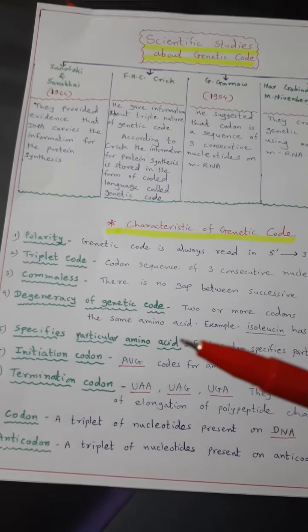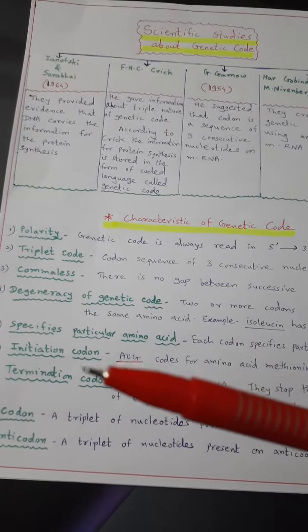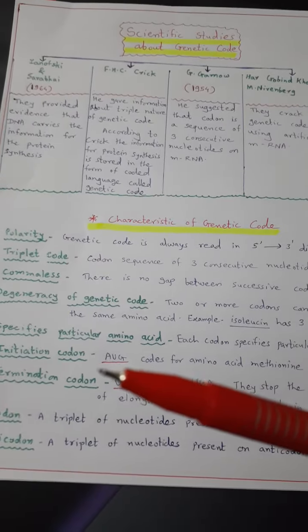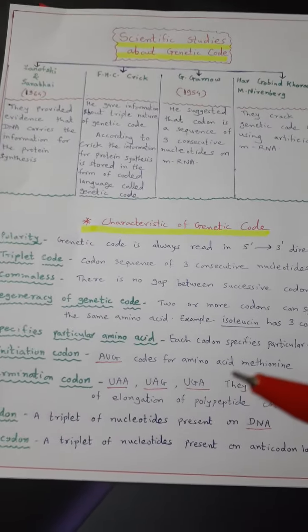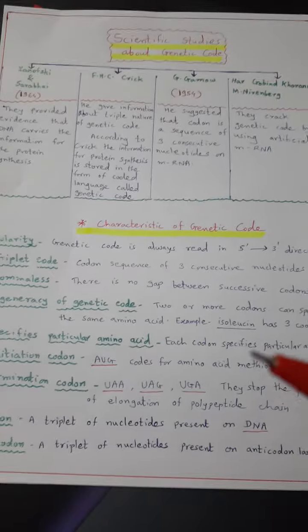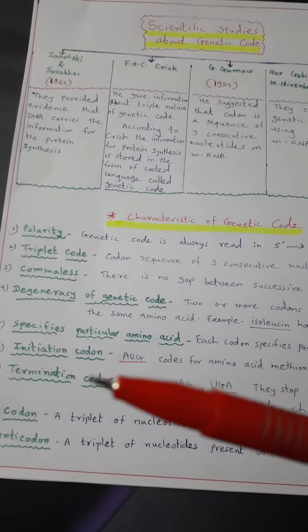They are specific for particular amino acids. Initiation codon: AUG codes for amino acid methionine, so AUG is the initiation codon.